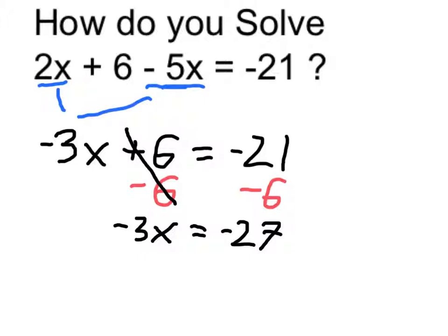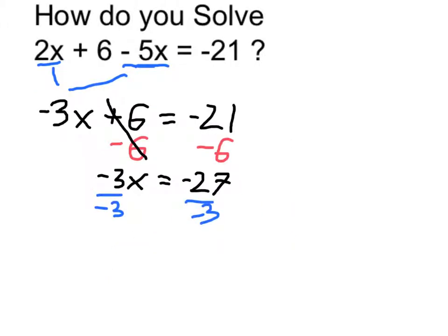Now finally, to get x completely alone, I can divide both sides by negative 3. Negative 3 over negative 3 is 1, so that just leaves me with 1 times x, or x is equal to negative 27 over negative 3, which is going to be a positive 9.